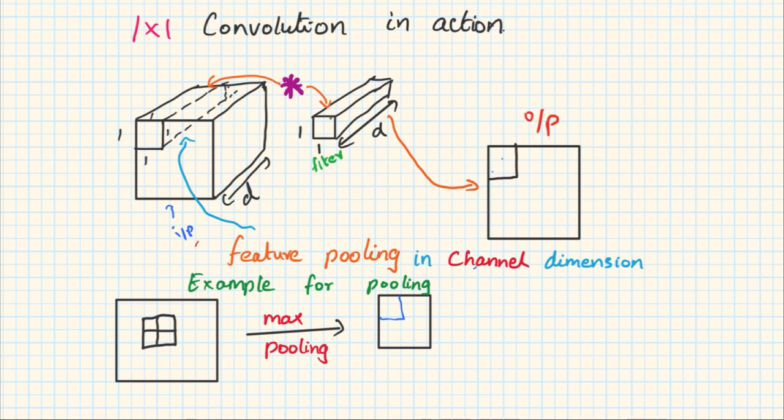So the first step is the 1 by 1 filter convolves with a cuboid in the input tensor that is of dimension 1 by 1 with depth D, and it produces a single output in the output tensor. The key point to note is it also acts as a feature pooling, because our input tensor interacts with D inputs and produces a single output.